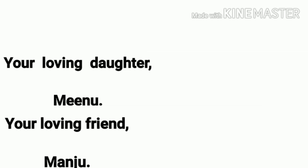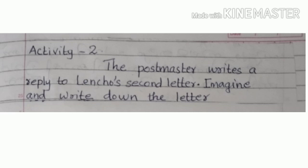After the main body, we write the closing, such as 'Your loving friend' or 'Your loving daughter,' on the bottom left side of the letter. Then you write your name — for example, 'Your loving daughter, Minu' or 'Your loving friend, Manchu.' It is better to write the name clearly.